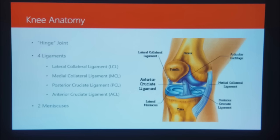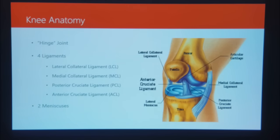Looking more at the center of the knee, we have the two cruciate ligaments. They get their name from 'cruciate,' another word for a cross or X pattern. The posterior cruciate ligament starts on the anterior medial side of the femur and works laterally to the posterior side of the tibia. Being that it starts from the front and works its way back down to the tibia, what it prevents is that posterior motion of the knee — basically hyperextension of the knee.